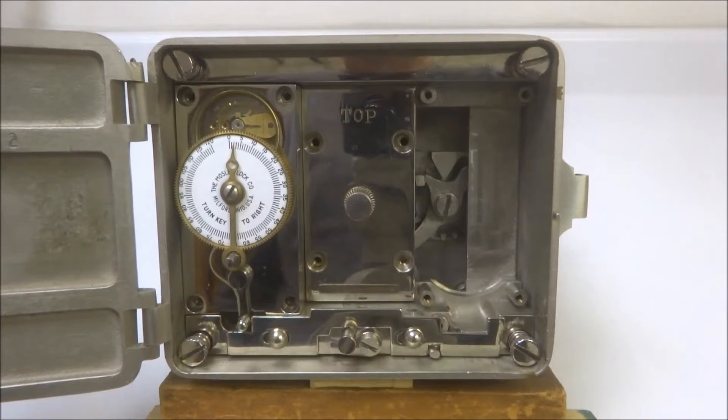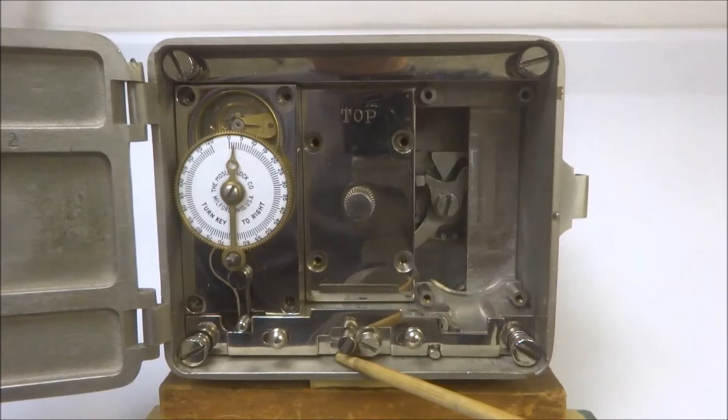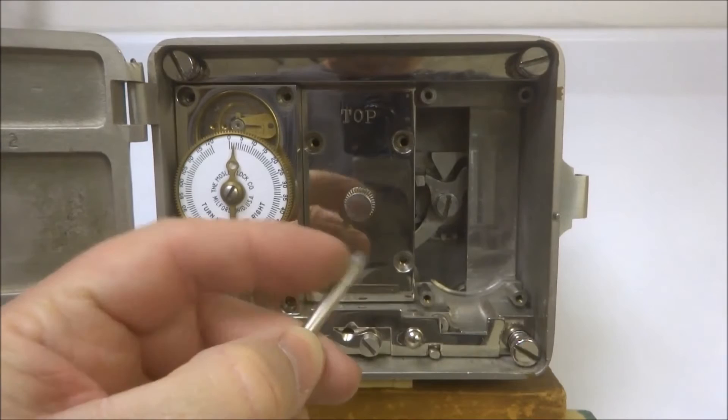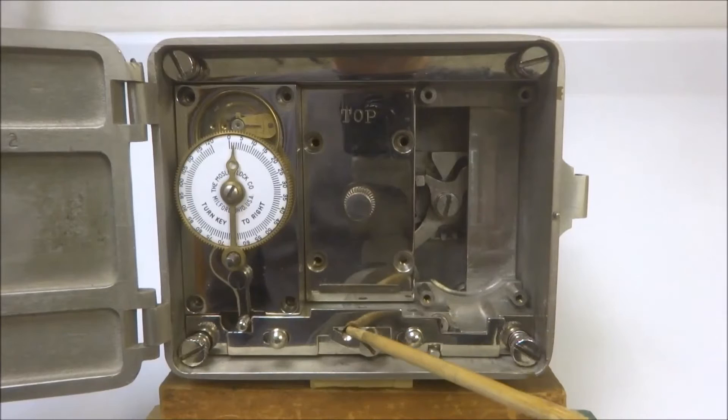Now the interesting feature of this particular time lock is actually this little piece here. And what this does is it blocks or releases a small lever under here. So, if one were to remove this and it looks very much just like a nail, has a little polished head on it, this little lever here then moves upward.